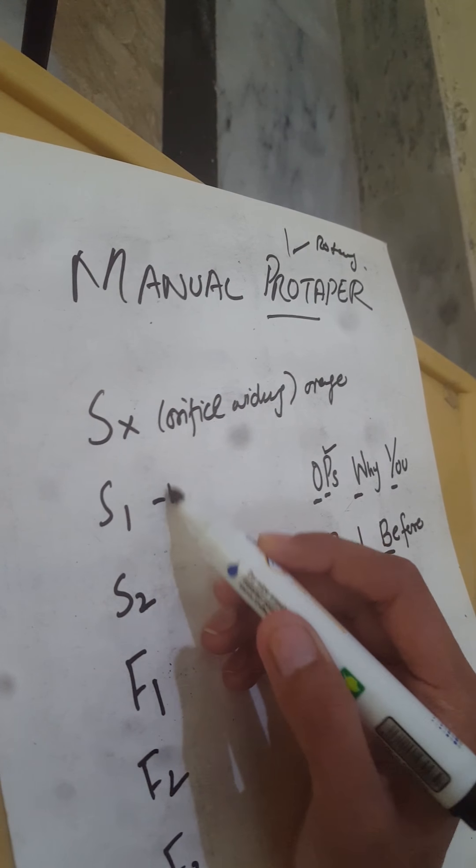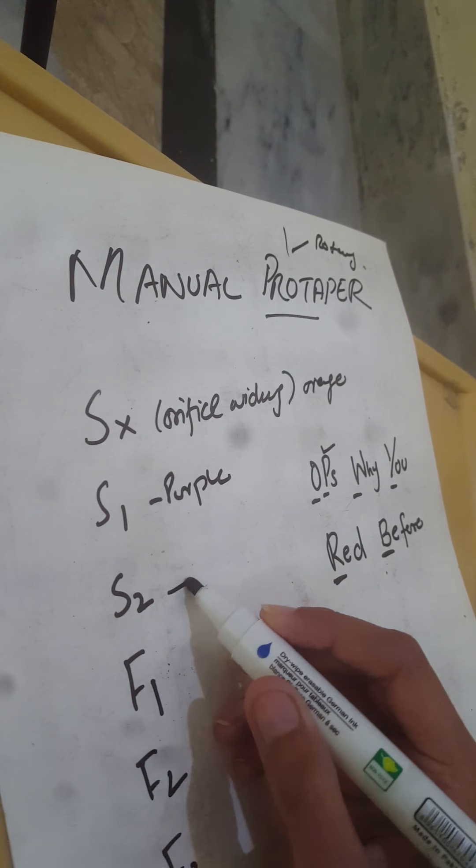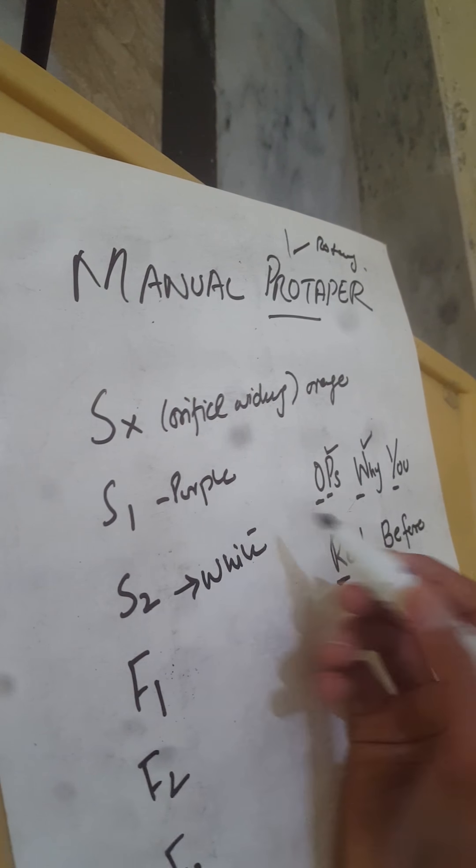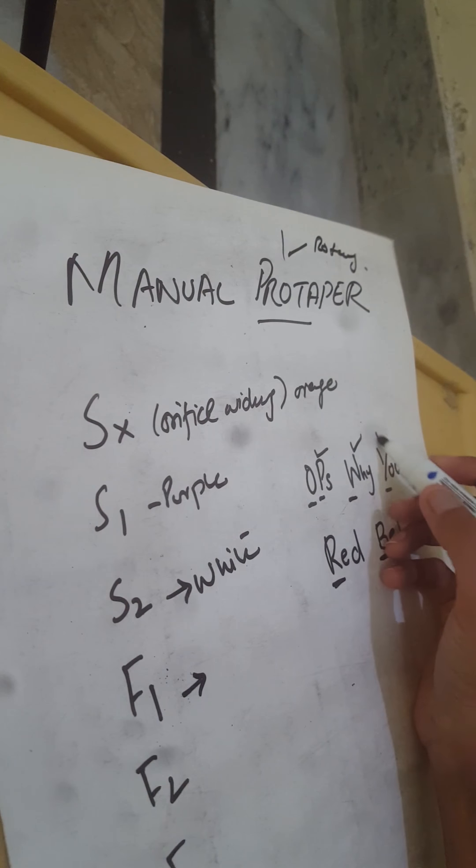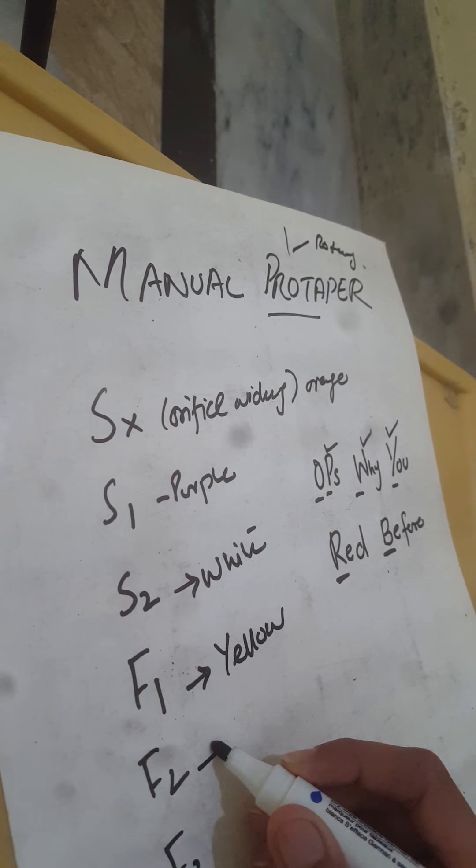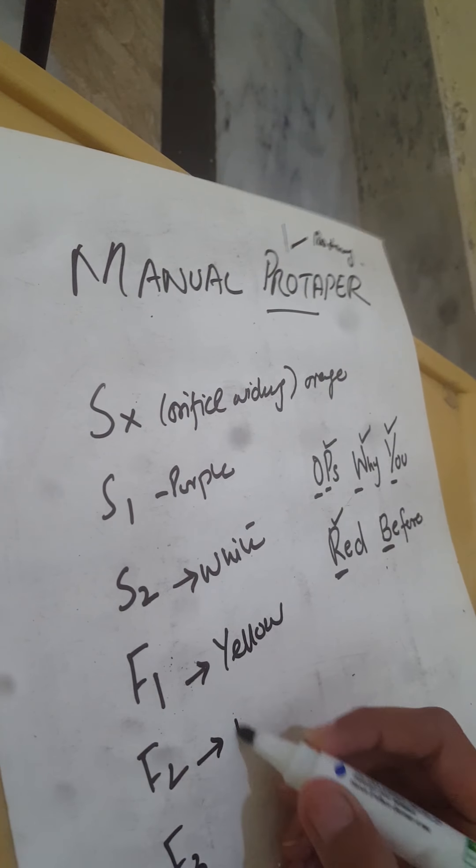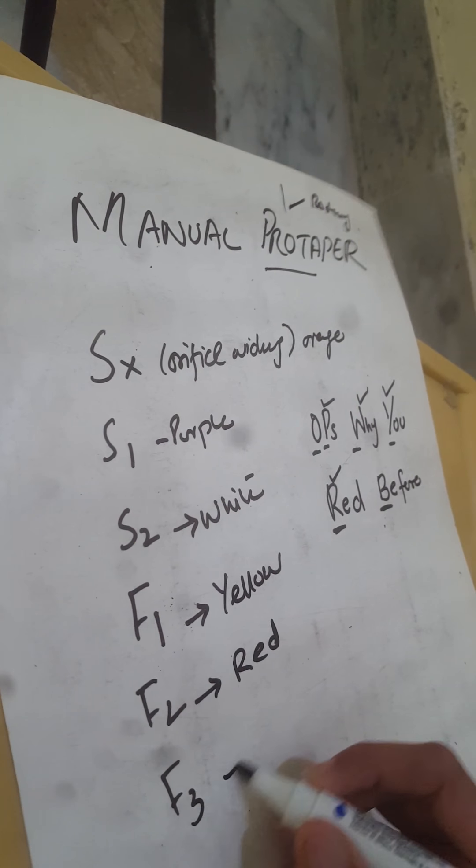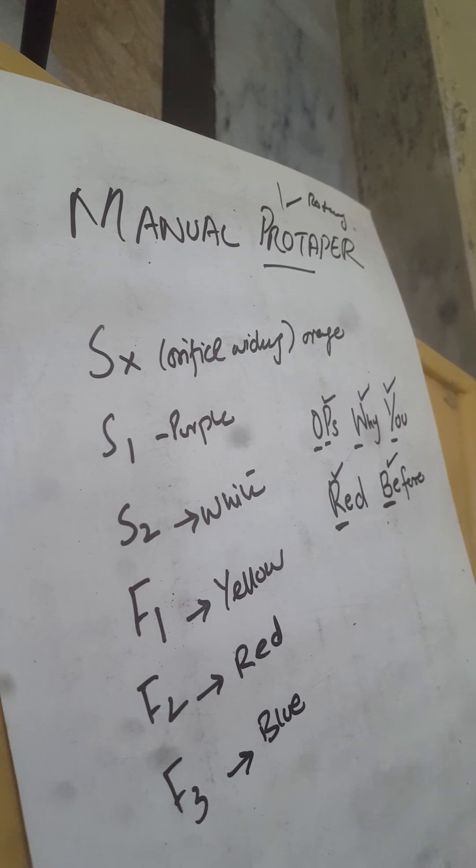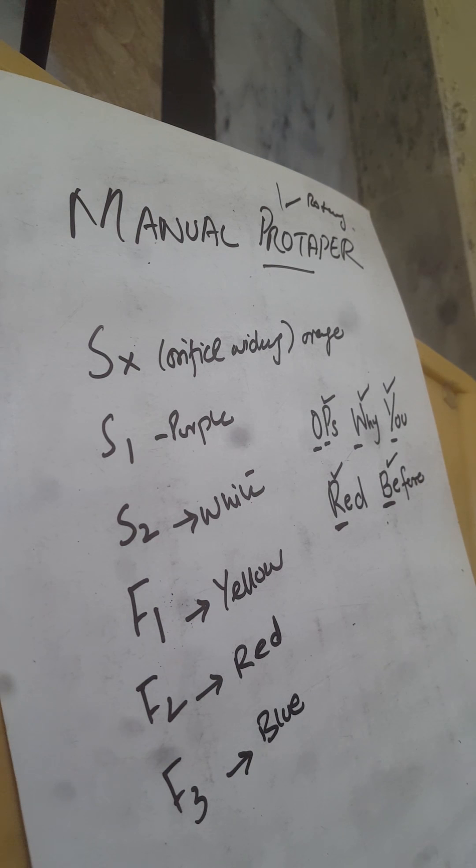S2 is white color. Then we have f1, the finishing file, which is yellow color. Then we have f2, another finishing file, which is red color. And we have f3 finishing file which is blue color.